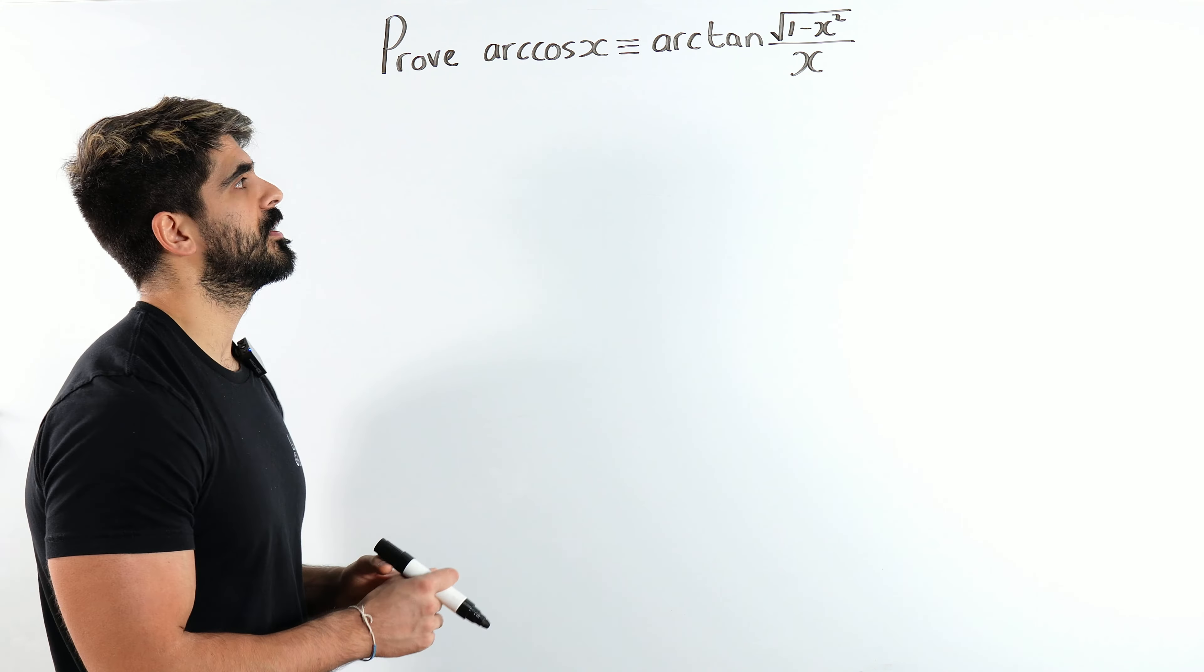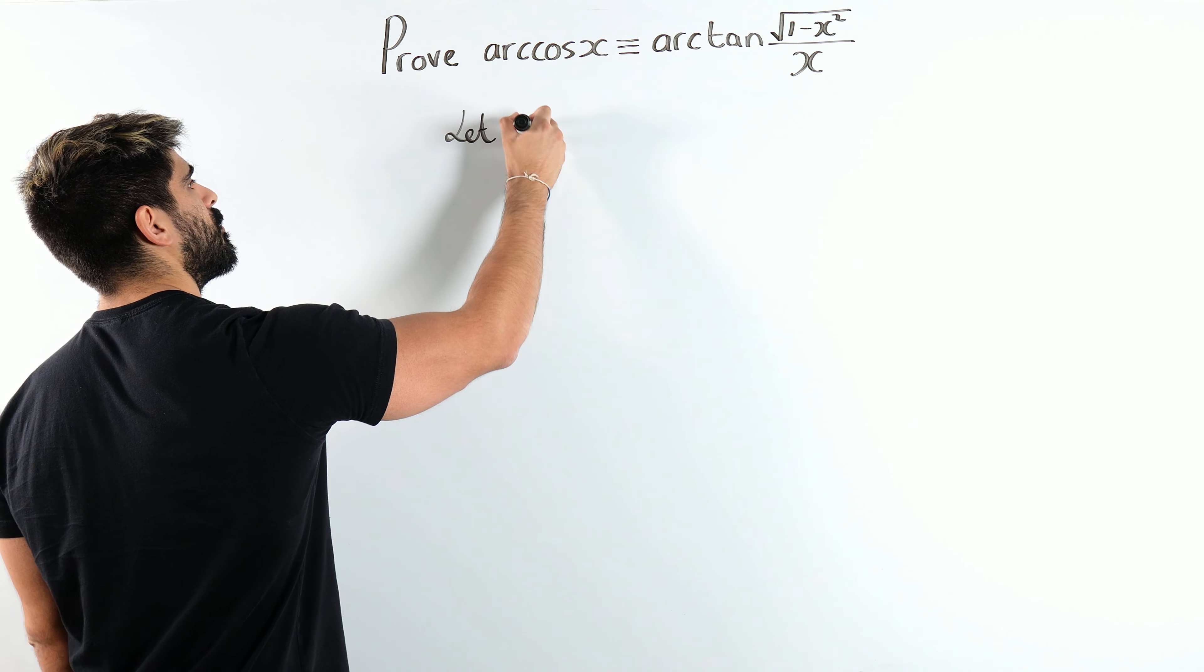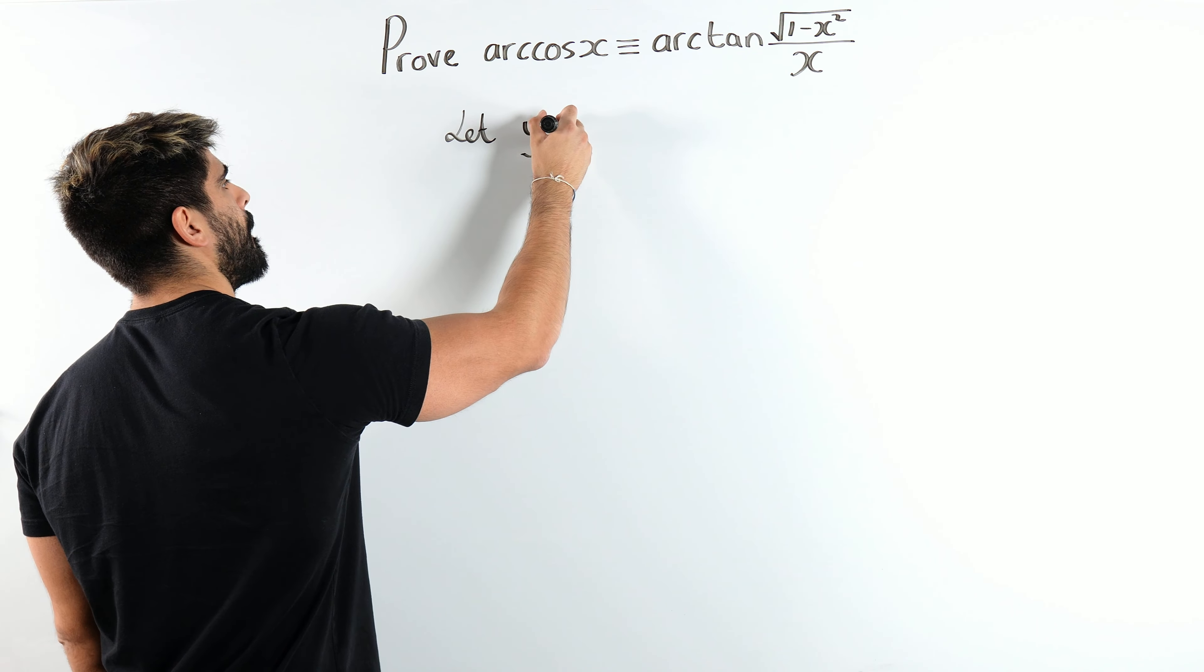What some students do is they do tan of both sides, or they just don't want to be working with the arcs. The arcs aren't so bad. But what I'm going to do is I'm going to let y be arccos x.